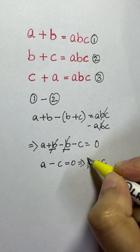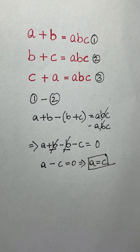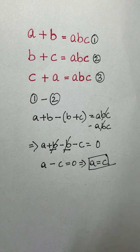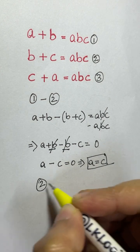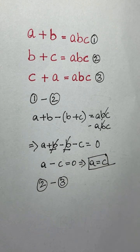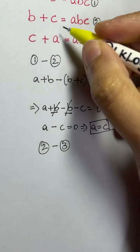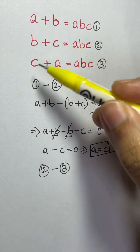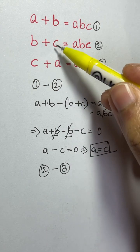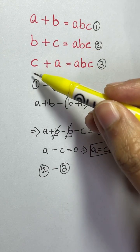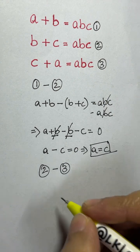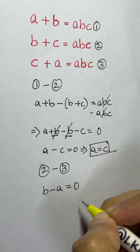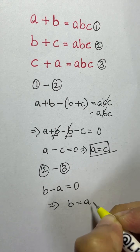Now let's see what we get from equations two and three. We subtract equation three from equation two: b plus c minus c plus a. The plus c and minus c cancel, leaving b minus a equals abc minus abc, which equals zero. So we get that b is equal to a.